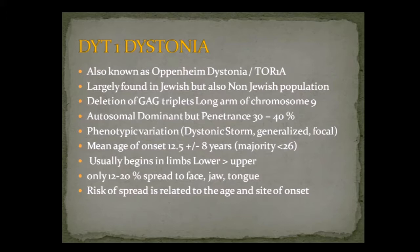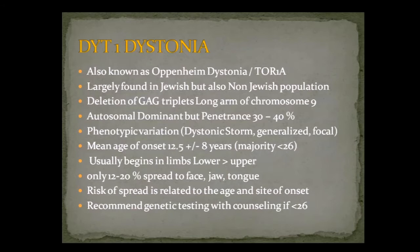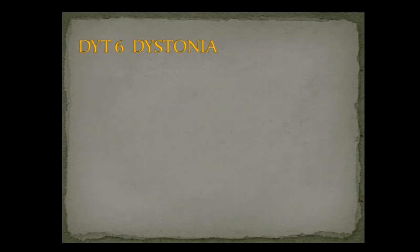If onset is early and begins from the leg, they are more prone to cranial involvement and generalized involvement. If it appears later, there is less chance of generalizing. The guidelines are that if patients are before age 26, you do want to consider genetic counseling, because as I said, how you manage these patients really depends on having the diagnosis.